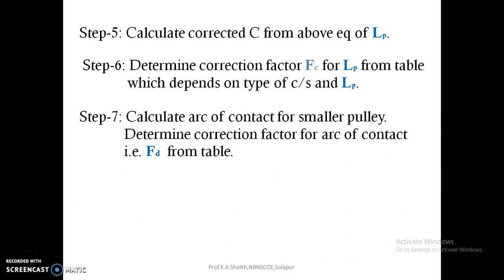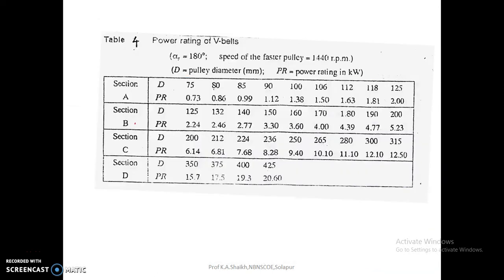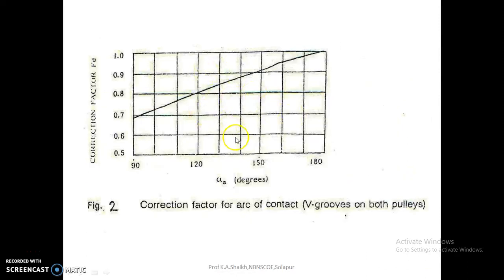Next, find the arc of contact for the smaller pulley using the formula: alpha_s = 180° minus sin⁻¹((D minus d) / 2C). For our case alpha_s is approximately 171°. From the correction factor graph, at 170° the curve intersects at approximately 0.98, so the arc of contact correction factor Fd is selected as 0.98.